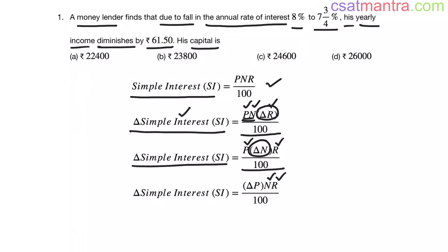Again, when N and R are constant, principal is changing. In that case, change in simple interest is equal to delta P NR by 100. Here, any two quantities are remaining constant and one quantity is changing. In that case, we will write the change in simple interest like this.